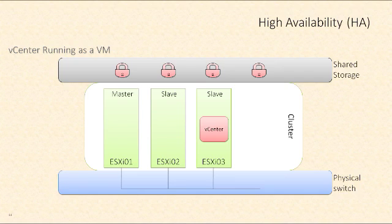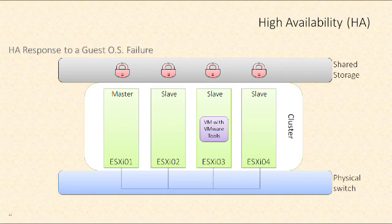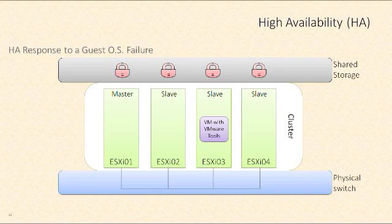Let's look at what happens if a guest operating system failure occurs. Here we see a virtual machine with VMware Tools running on it, and we've chosen to do virtual machine level monitoring with HA. When this virtual machine fails, VMware Tools stop sending heartbeats. Maybe the virtual machine has crashed, or maybe just VMware Tools crashed while the virtual machine is still working. Once VMware Tools stops sending heartbeats, the host will check if there's any IO coming from this VM to make sure it's truly down. If there are no heartbeats from VMware Tools and no IO coming from the VM, high availability will simply reboot that virtual machine right there on the same host.